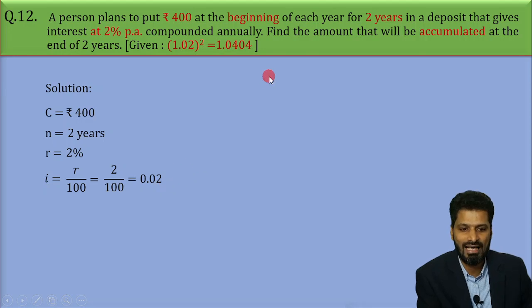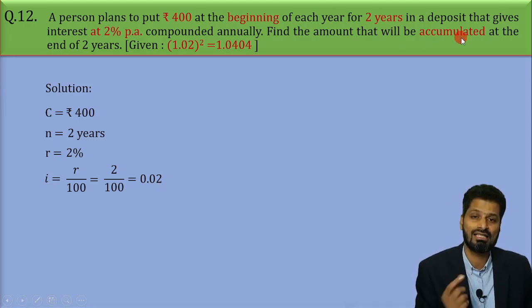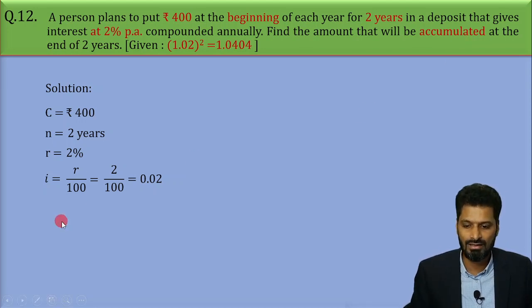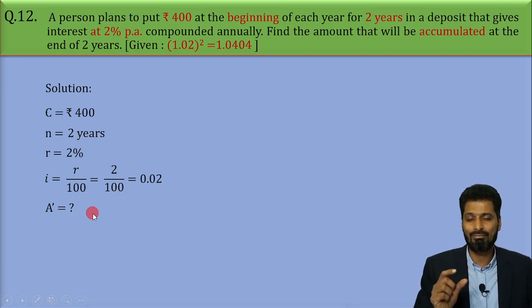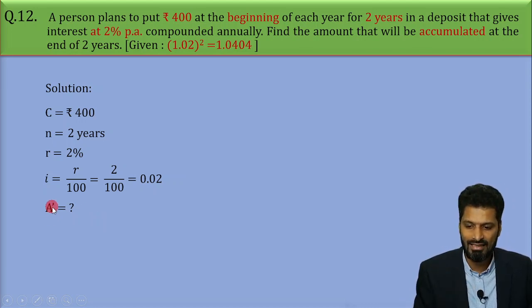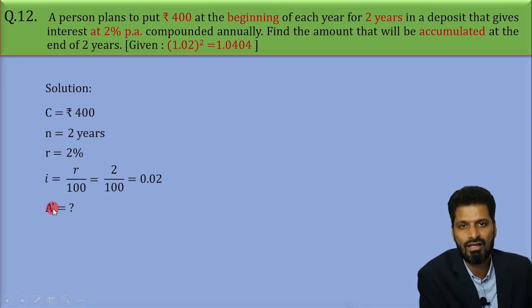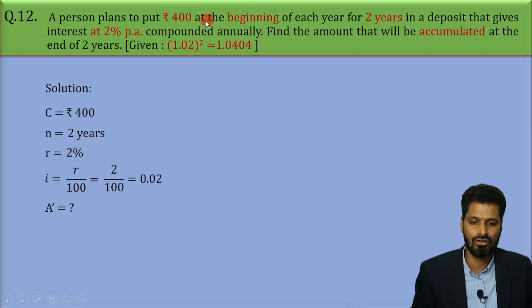And what is to be calculated? The accumulated amount. The accumulated amount which is for annuity due. So, it means A dash is to be calculated. Remember, A meaning accumulated value for annuity immediate and A dash meaning accumulated value for annuity due. So, here we have A dash to find. Why? Because the annuity is put at the beginning of each year, right?